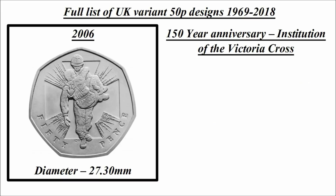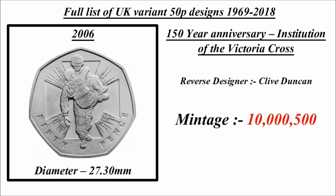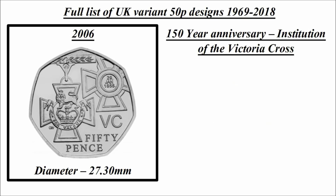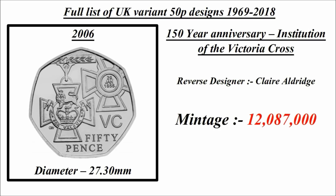2006 saw two different designs for the 150-year anniversary of the Institution of the Victoria Cross. The first has reverse designer Clive Duncan with a mintage of 10,500,000. The second has reverse designer Claire Aldridge with a mintage of 12,087,000.